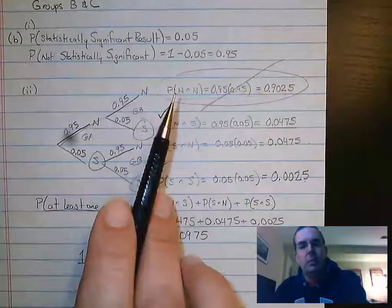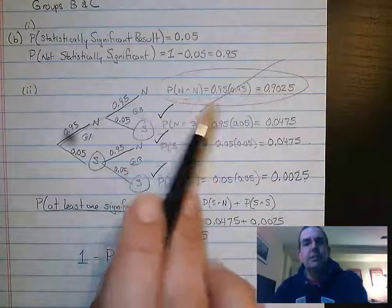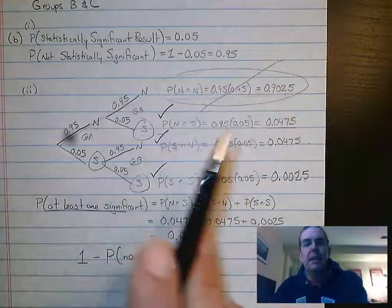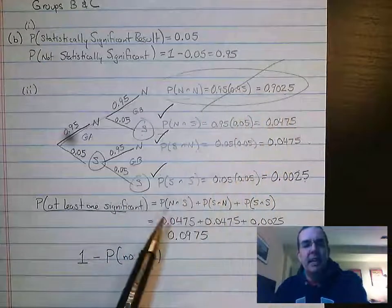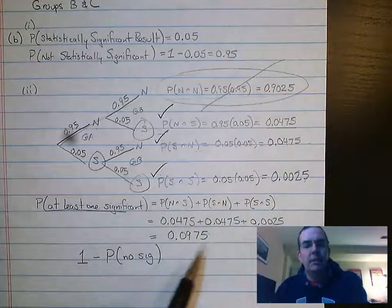In this case, what I didn't want was two not significant tests. So 0.9025, the complement to that one minus that gives me that same 0.0975.